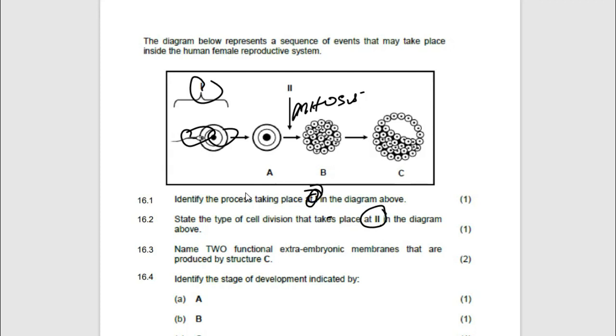And then they are saying name two functional extra embryonic membranes that are produced by structure C. Structure C. They are saying functional, it means that something which is functioning. We have four extra embryonic membranes. We have the chorion, alantois, yolk sac, and then amnion. But in this case, in humans, we only have the chorion and amnion.